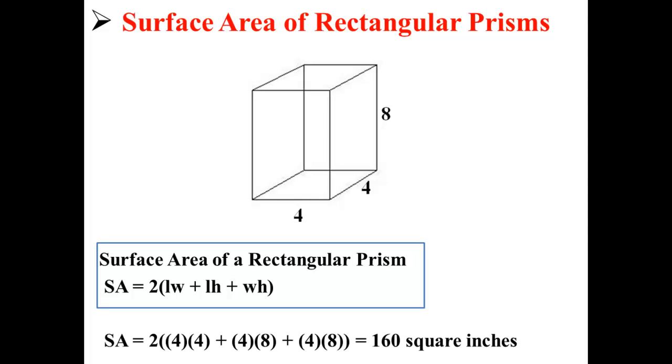So, for this rectangular prism, the surface area is equal to 2 times 4 times 4 plus 4 times 8 plus 4 times 8, or simply 160 square inches.